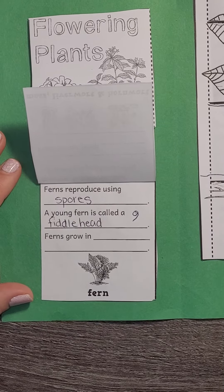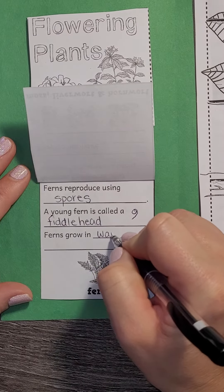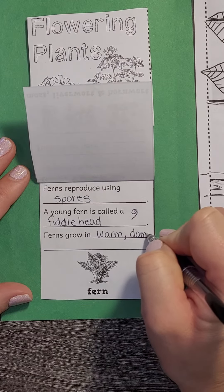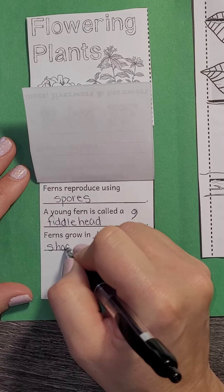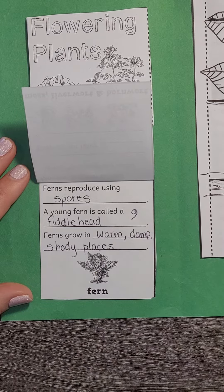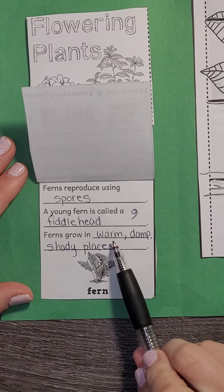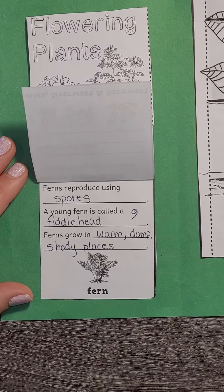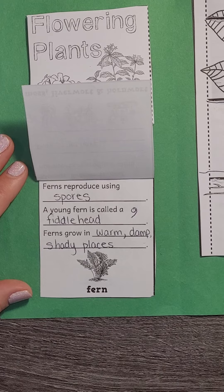We talked about ferns liking to grow in warm, damp — so that means they like to be wet — shady places. They do not like to be in that hot sun. They like to grow in warm, damp, shady places, and this is going to be an answer to one of your questions today.